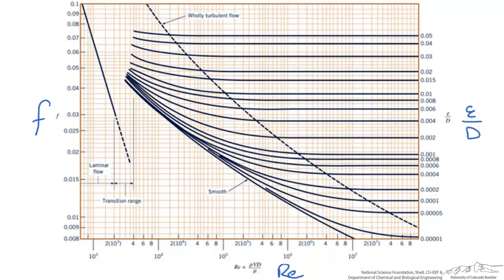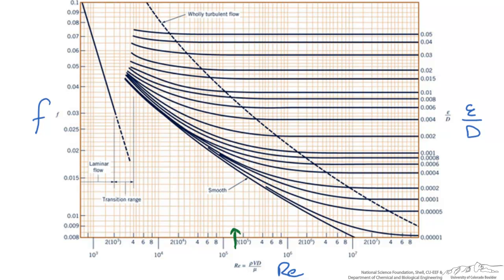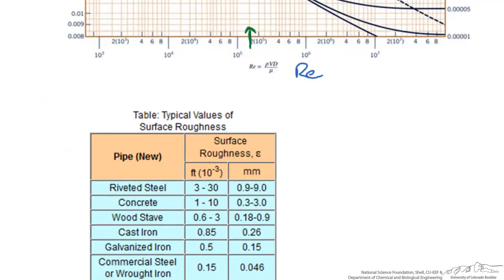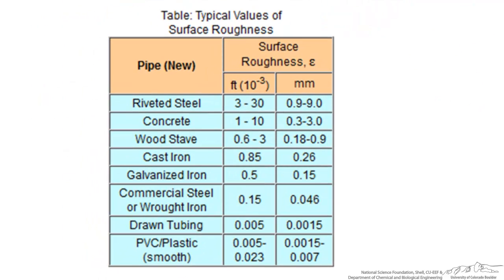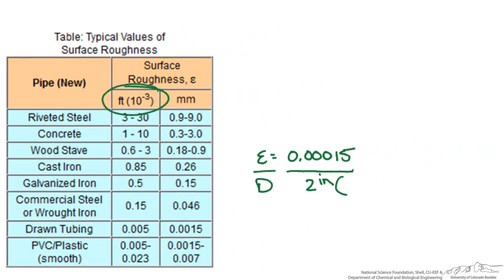Let's go to the plot. We have a Reynolds number of 1.4 × 10⁵, which puts us roughly right in this area. We still need our relative roughness. We're told we have commercial steel. Since we're working with feet, our roughness is 0.00015. We divide that by our diameter and get a relative roughness of approximately 9 × 10⁻⁴.